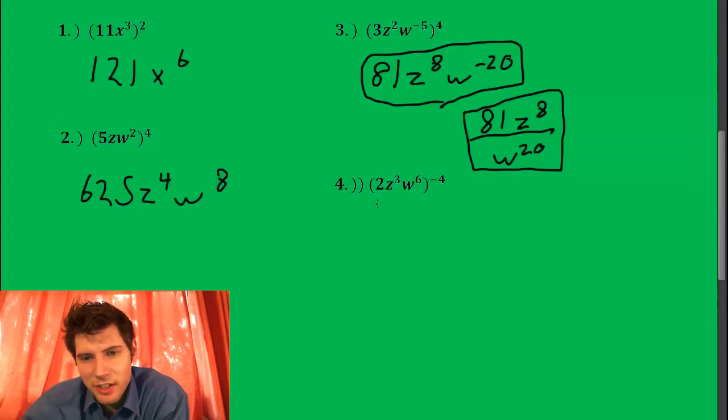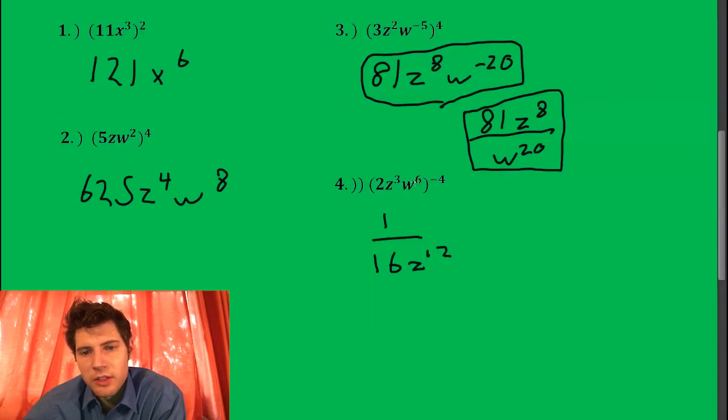Next one, this guy here. 2 to the negative 4 ends up being 1 over 2 to the 4, which is 16. And this is z to the negative 12, so it's on bottom. And this is w to the negative 24, so it's also on bottom.